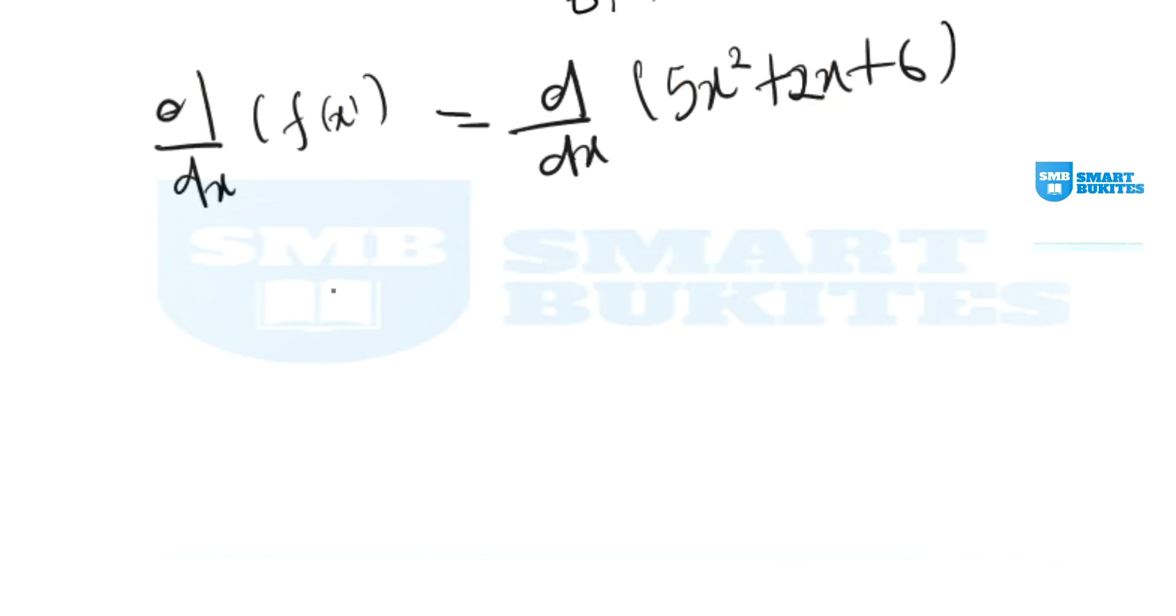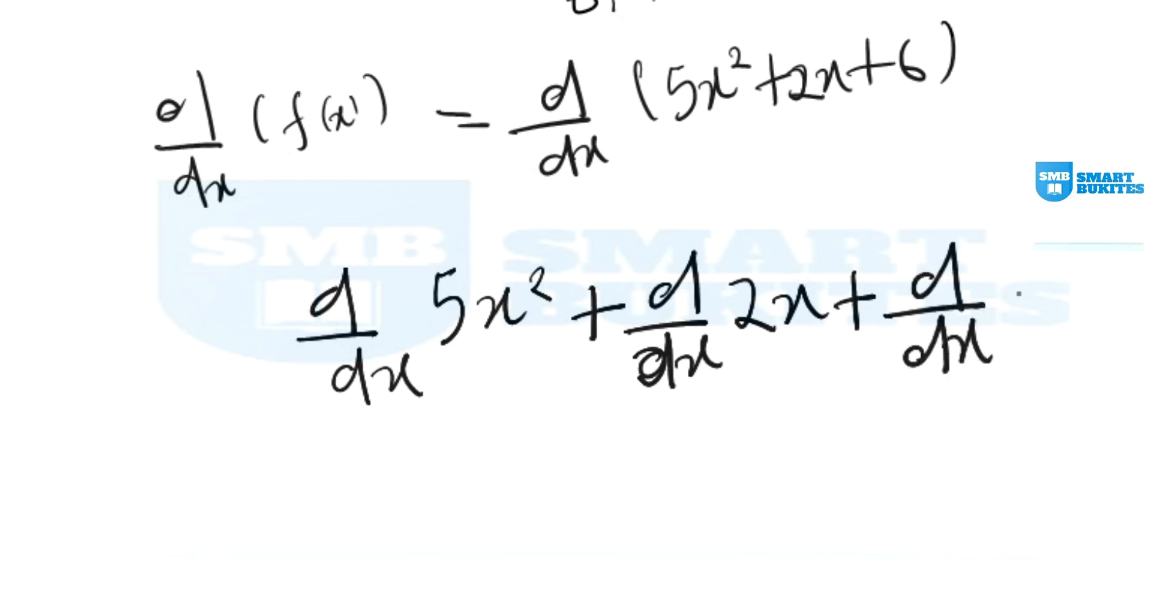We say d/dx of the first term which is 5x² plus d/dx of the second which is 2x plus d/dx of the third term which is 6.